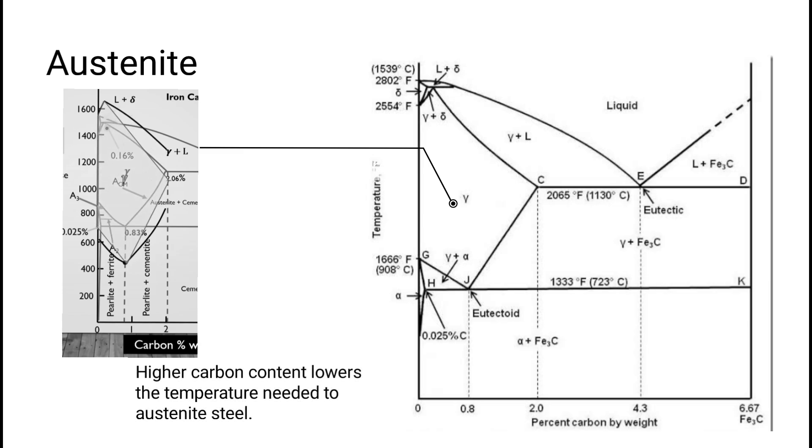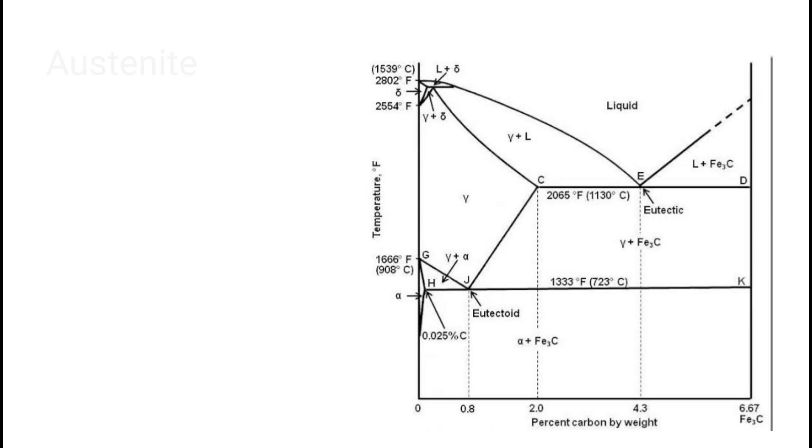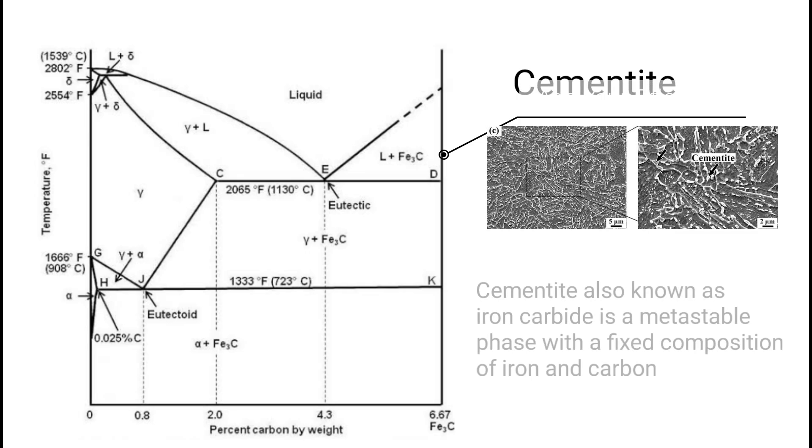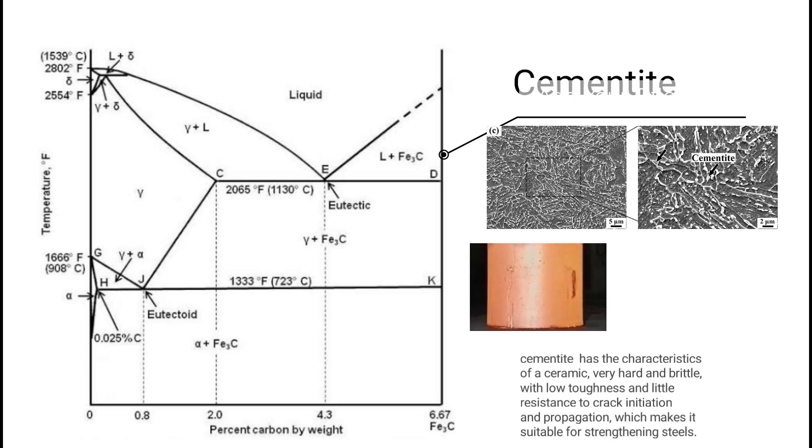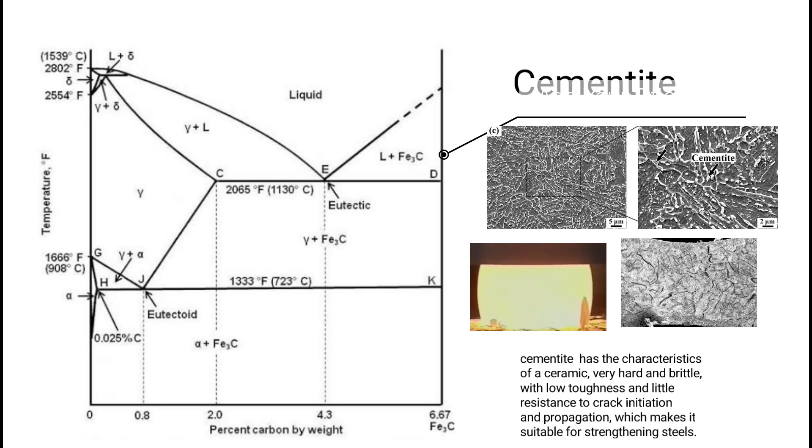Cementite, also known as iron carbide, is a metastable phase with a fixed composition of iron and carbon. It decomposes extremely slowly at room temperature into alpha iron and graphite.